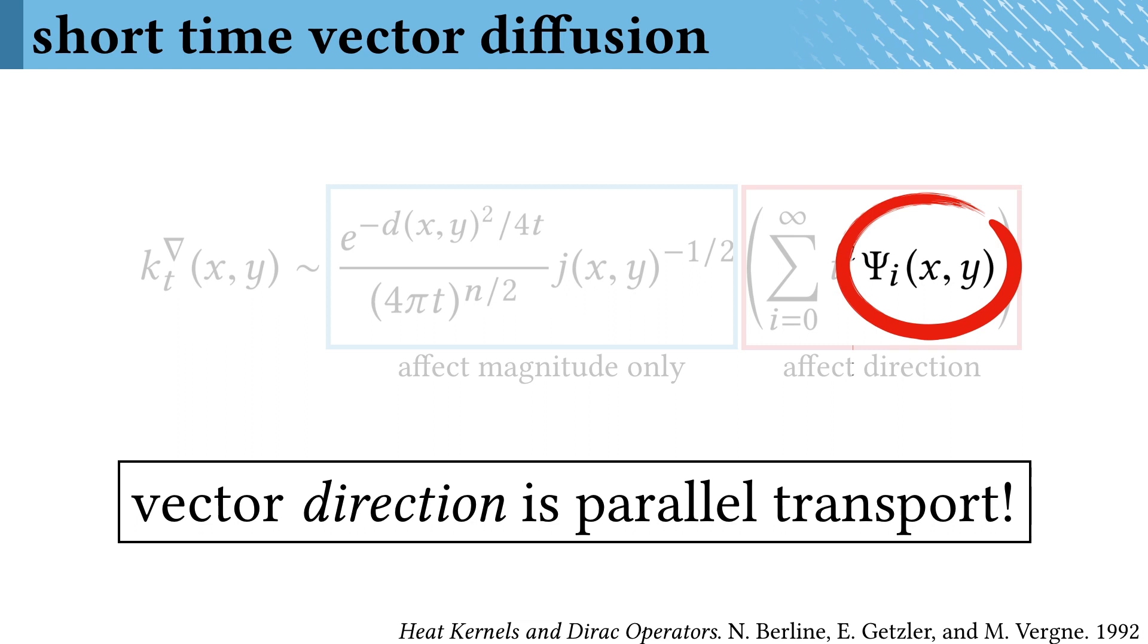This means that vector diffusion can give us parallel transport. All we need to do is sort out the vector magnitudes. And with the vector heat method, we do exactly that.